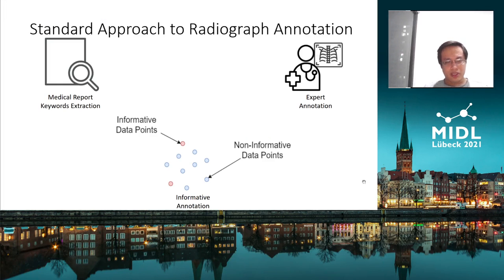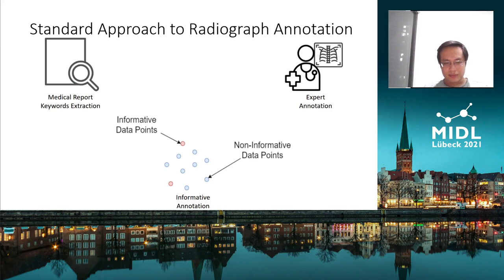In medical imaging, acquiring annotated chest X-ray images is hard. Approaches like CheXpert and MIMIC use keywords from medical reports to extract annotations. However, such approaches are quite noisy. Another high-quality approach is using expert annotation, but it is quite costly.